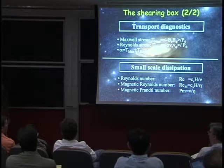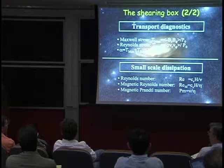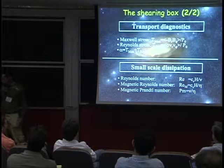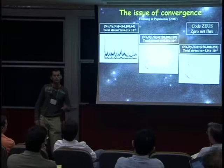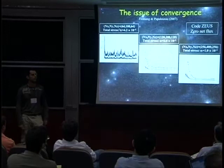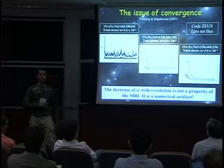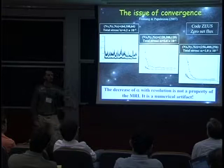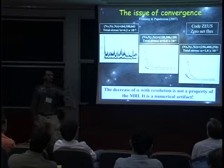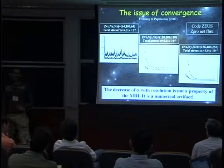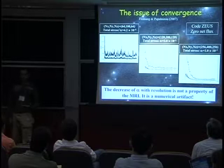The important parameter we've heard about is the magnetic Prandtl number PM, the ratio of viscosity over resistivity. So why do we care about small-scale dissipation? We know now that when you take Zeus and run a zero net flux simulation in the shearing box at increasing resolution, we find a decreasing value of transport that seems to converge to zero. Let me stress that this is not a property of the MRI — it's simply a numerical artifact. It's due to the code and tells us that what happens at the grid scale is important and unresolved because we haven't put dissipation coefficients in. To have a meaningful simulation we need proper dissipation coefficients.